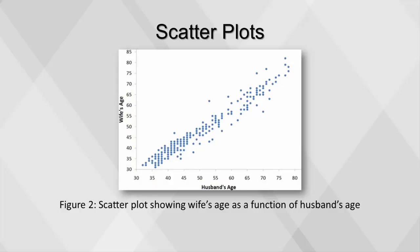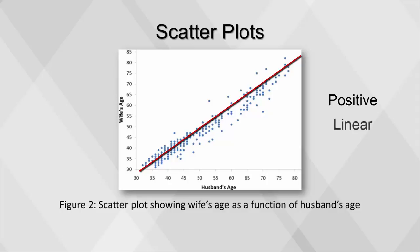First, it's clear that there's a strong relationship between the husband's age and the wife's age. The older the husband, the older the wife. When one variable, y, increases with the second variable, x, we say that x and y have a positive association. Conversely, when y decreases as x increases, we say that they have a negative association. Second, the points cluster along a straight line. When this occurs, the relationship is called a linear relationship.